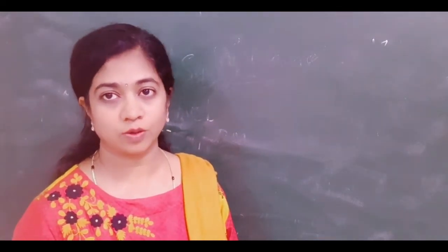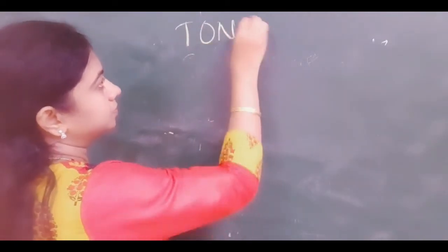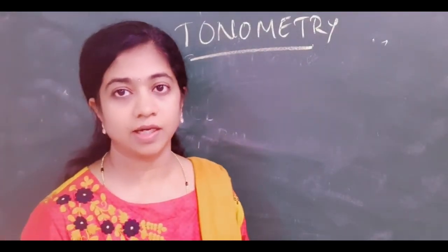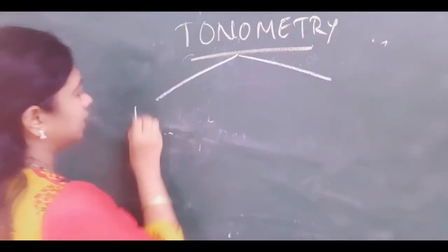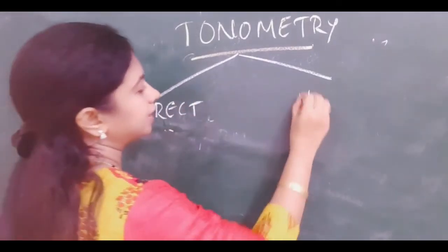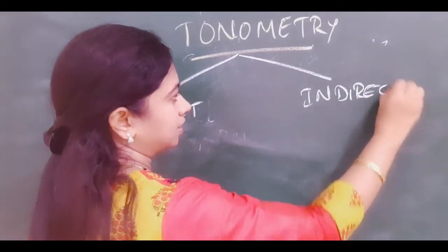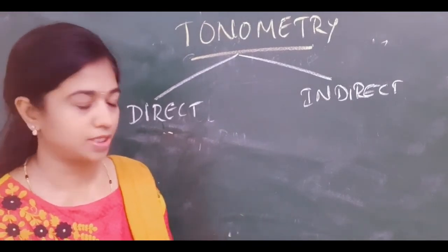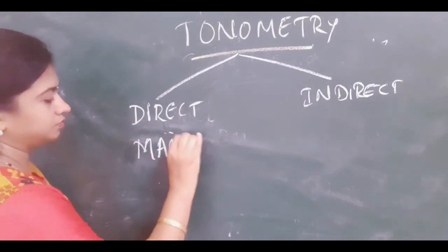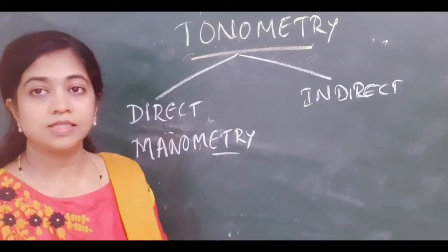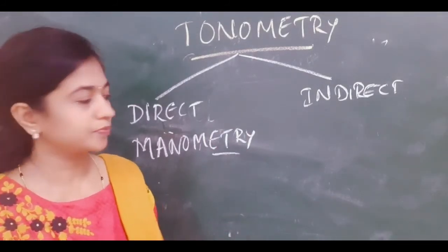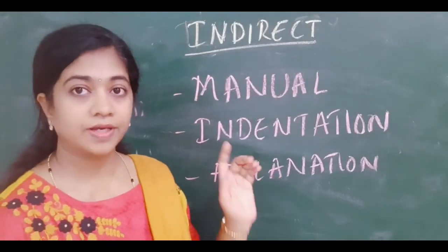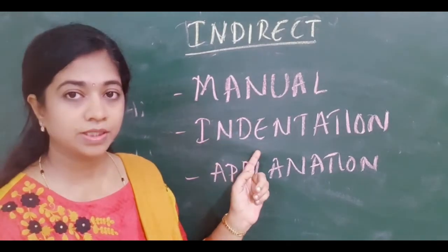Coming to tonometry — that is measuring the intraocular pressure. The IOP can be measured either directly or indirectly. Broadly, tonometry can be classified into direct methods and indirect methods. In indirect methods, we have manual methods, indentation methods, and applanation methods.